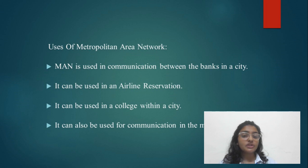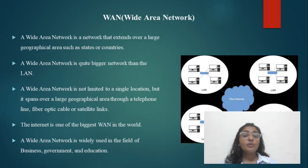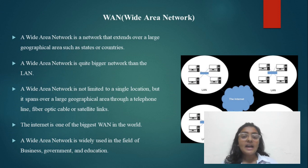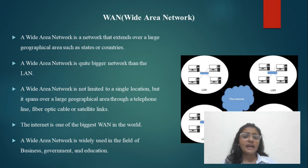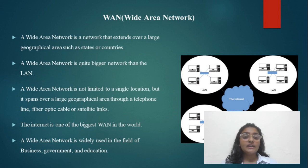The last type is WAN, Wide Area Network. A wide area network extends over a large geographical area such as states or countries. WAN is a much bigger network than LAN and MAN. It is not limited to a single location but spans large geographical areas through telephone lines, fiber optic cables, or satellite links. The internet is one of the biggest WANs in the world. Wide area networks are widely used in the fields of business, government, and education.